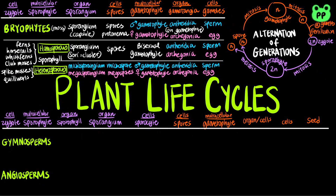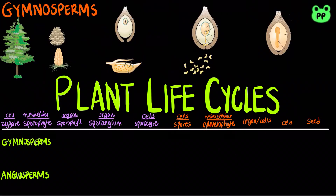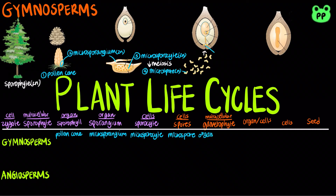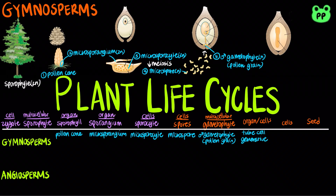All seed plants are heterosporous. In the life cycle of a gymnosperm, such as a pine tree, the sporophyte — which is the tree — produces two types of cones, which are modified leaves. The pollen cone contains the male sex organ known as microsporangia, which contains cells known as microsporocytes, which produce microspores through meiosis. Microspores develop into male gametophytes known as pollen grains.